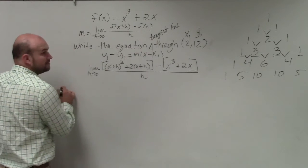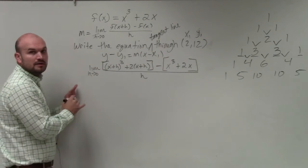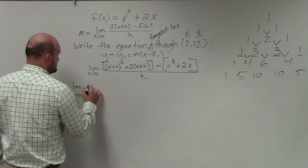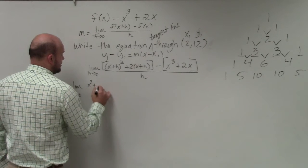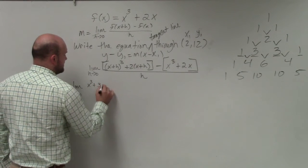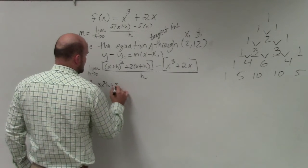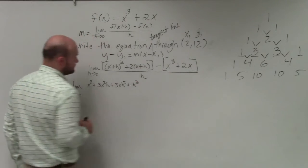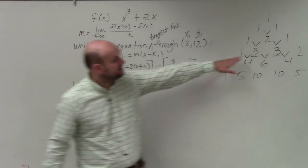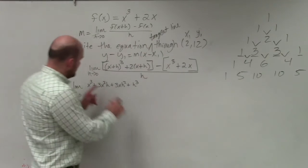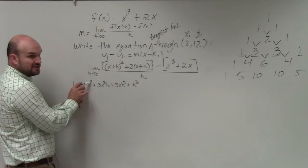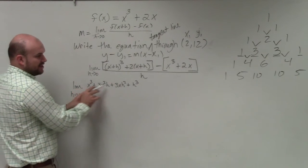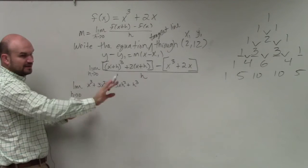So I'll do limit as h approaches 0. x plus h cubed is going to be x cubed plus 3x squared h plus 3x h squared plus h cubed. And again, I'm just using these values as its coefficients. I start with x cubed, because that's the first term, start that going to the third power, and then I go into ascending powers. My h, I start with h to the 0 and go to ascending powers. Quickly expanded.